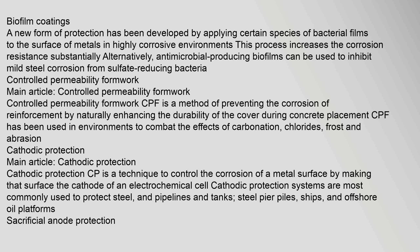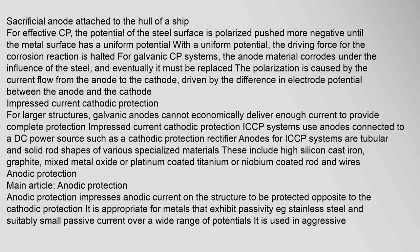Cathodic protection — main article. Cathodic protection (CP) is a technique to control the corrosion of a metal surface by making that surface the cathode of an electrochemical cell. Cathodic protection systems are most commonly used to protect steel pipelines in tanks, steel pipe piles, ships, and offshore oil platforms. For effective CP, the potential of the steel surface is polarized — pushed more negative — until the metal surface has a uniform potential. With a uniform potential, the driving force for the corrosion reaction is halted. For galvanic CP systems, the anode material corrodes under the influence of the steel and eventually must be replaced. The polarization is caused by the current flow from the anode to the cathode, driven by the difference in electrode potential between the anode and the cathode.